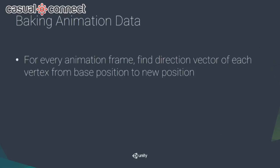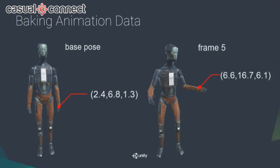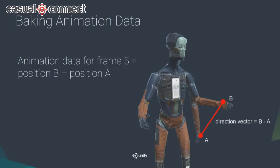The trick is to map the XYZ value of your animation data to the RGB channel of the texture. For every animation frame, we find the direction vector of a vertex from its base position to its frame position and bake that to the texture. For example, taking the vertex at Adam's hand at frame 5, we find the direction vector — the difference between the two positions. It's simply position B minus position A.